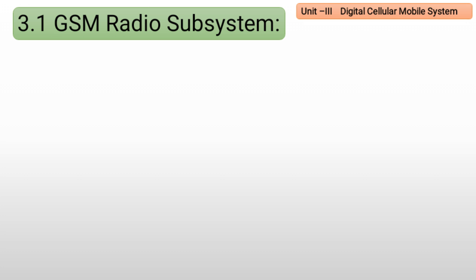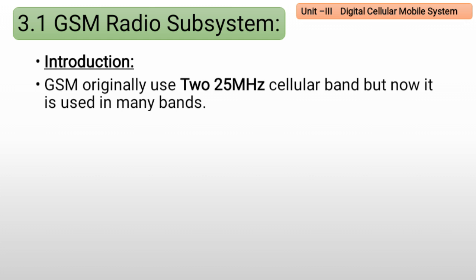In the GSM radio subsystem, we will study how the frequency allocated to GSM is divided and how it is allocated to users. GSM originally used the 225 MHz cellular band, but now it is used in many bands.